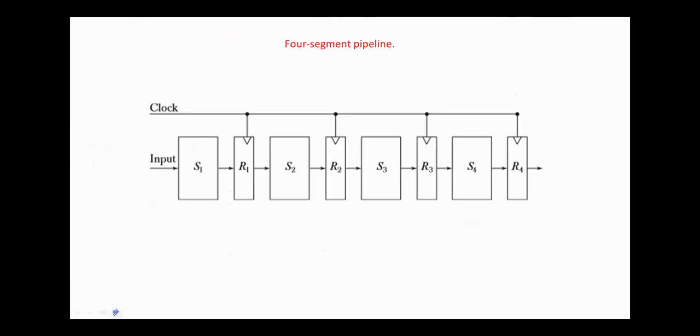This figure shows the general structure of a four-segment pipeline. In each segment, we have a combination logic circuit that performs a sub-operation over the data stream flowing through the pipeline. The segments are separated by registers, RI. Registers are used as buffer to hold the intermediate results between the segments or the stages.